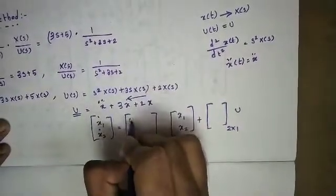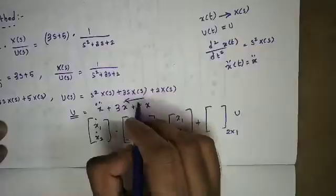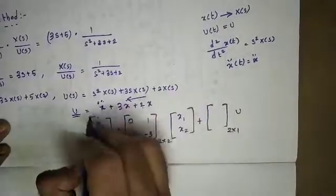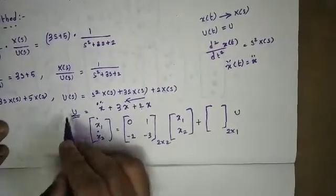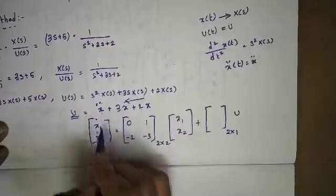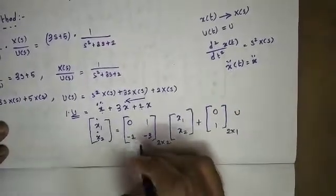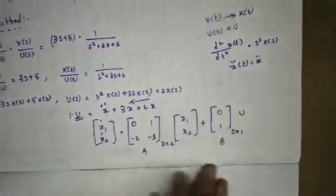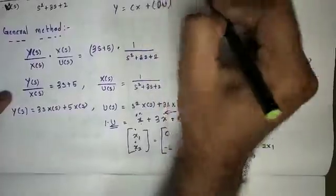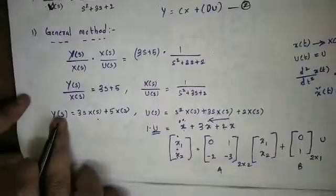Now you can see the differential equation. A is filled low to high. Next order coefficients with reverse sign — sign change, opposite sign. Plus 2 becomes minus 2, plus 3 becomes minus 3. So A is filled. Matrix A and Matrix B are done — x-dot equation, the first equation, is done.